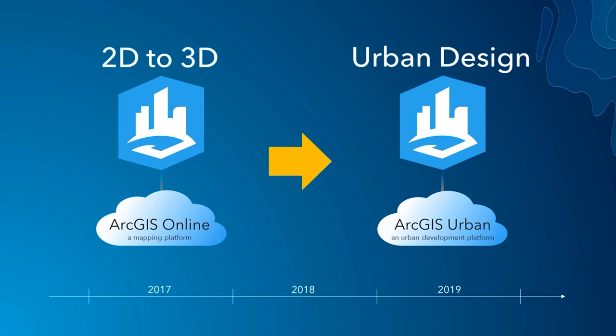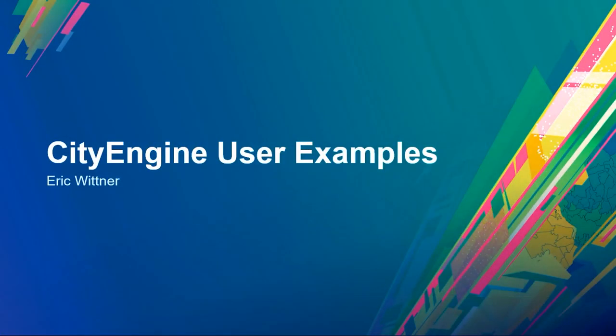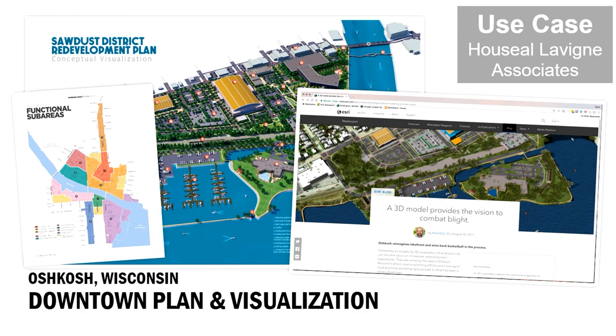I want to have one of our partners, Devin, come up and talk about how he uses CityEngine on two examples — one in Oshkosh and the other in Battle Creek. Devin is a city partner with Esri, does a lot of work in CityEngine for urban planning and urban design. They're a small company of 20 people based in Chicago, and CityEngine has helped them compete against large AEC firms. They've built a strong reputation and partnership with Esri.